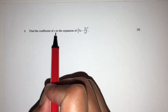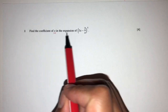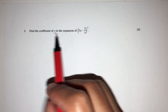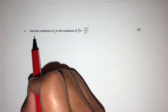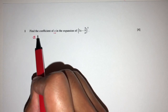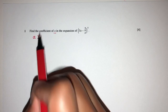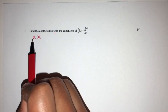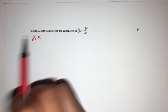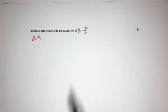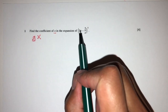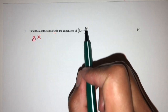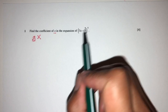We have to find the coefficient of x in this expansion. When we have ax, we need to find the value of a for the term in x. Here we have 3x minus 2 over x, all to the power 5.